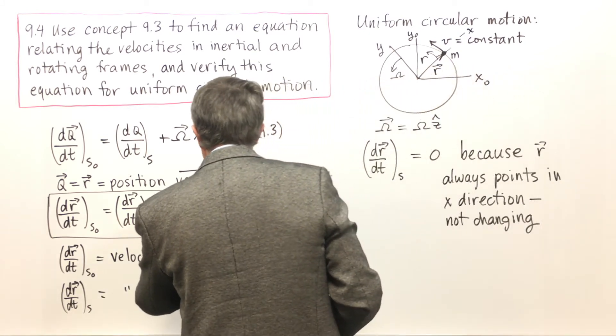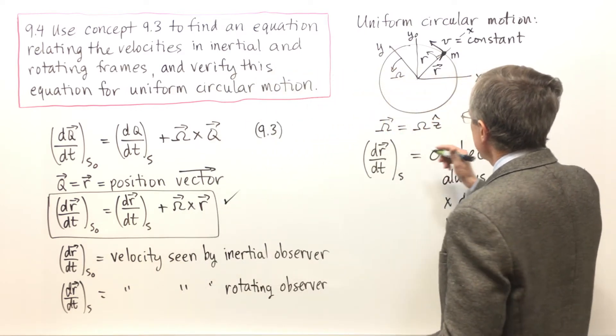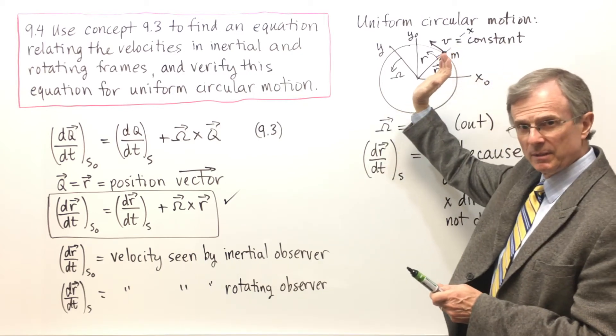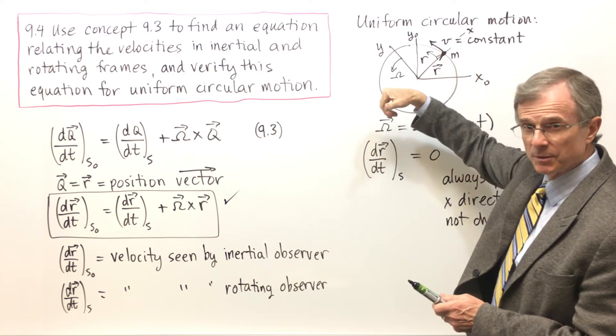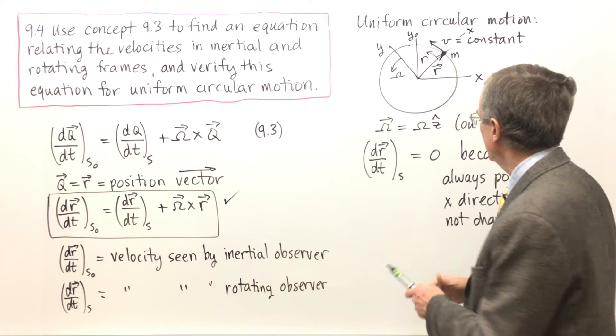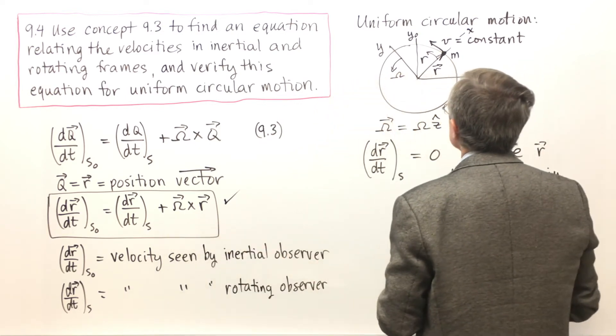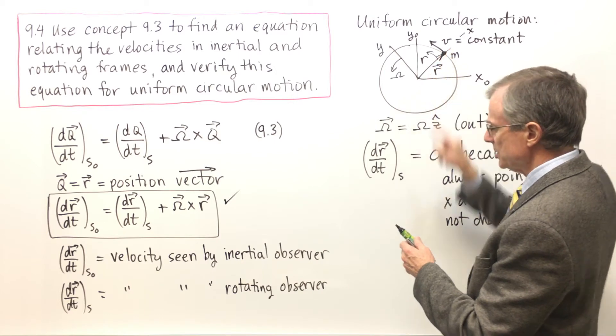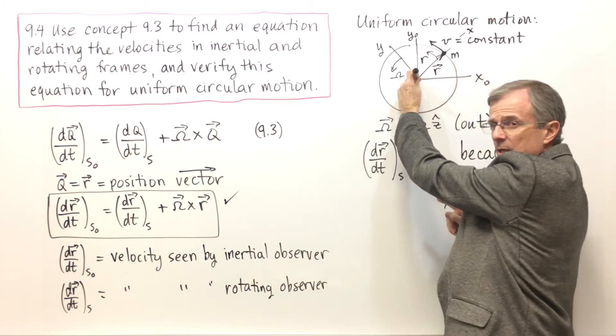This term omega cross R is going to be the vector omega which is out of the board. We get that simply by putting the heel of our hand at the axis of rotation and rotating our fingers in the direction of rotation, and our thumb gives the direction of angular velocity which is out of the board. So let me let this marker represent omega, and R is in this direction. I have to get their cross product.